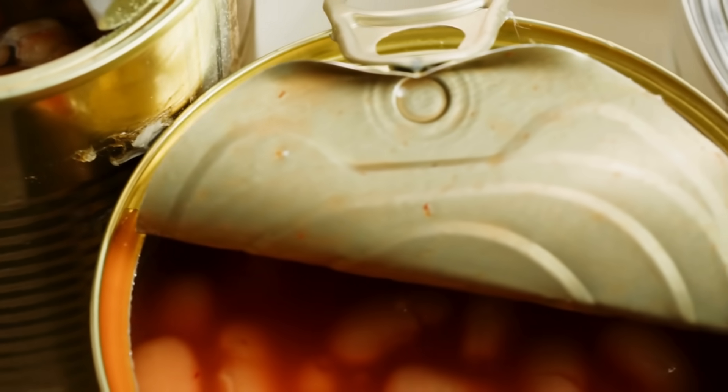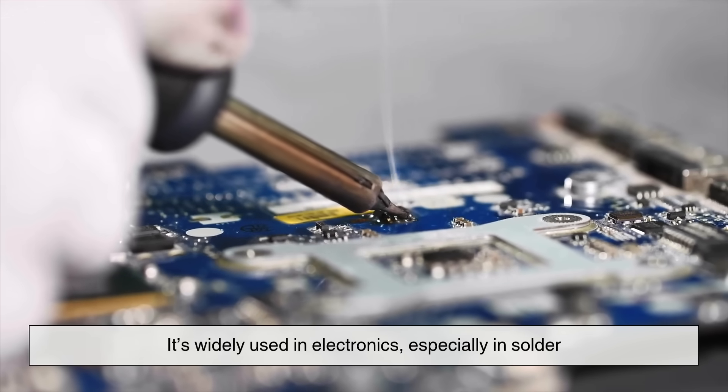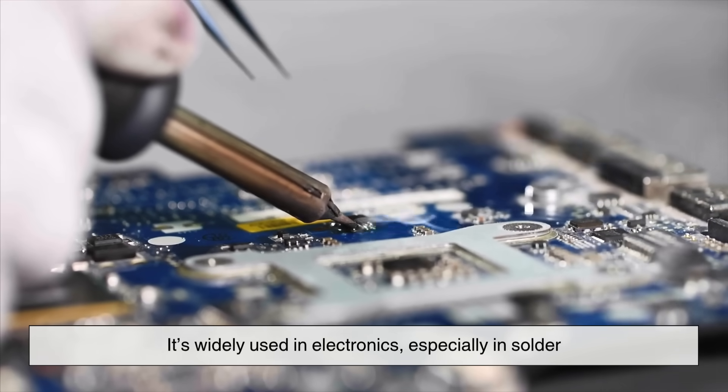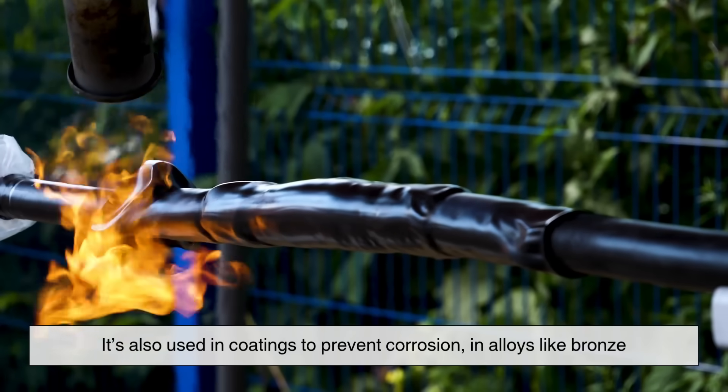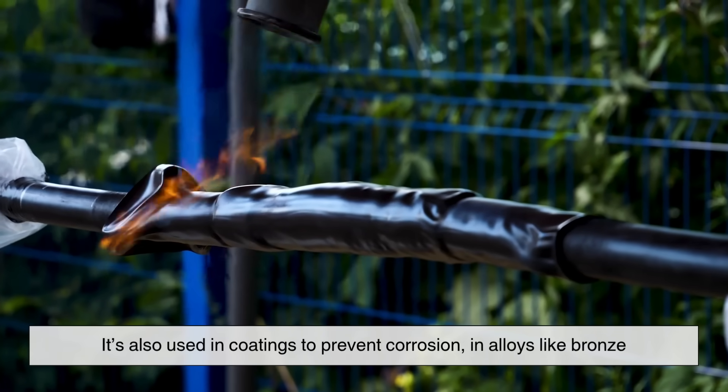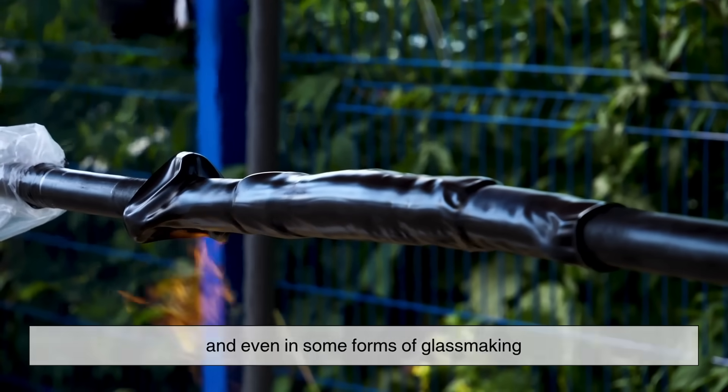Despite its quirks, tin is still incredibly useful. It's widely used in electronics, especially in solder, the substance that connects circuits together. It's also used in coatings to prevent corrosion, in alloys like bronze, and even in some forms of glassmaking.